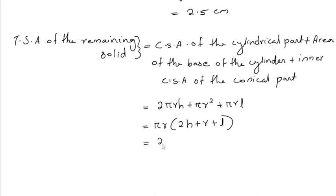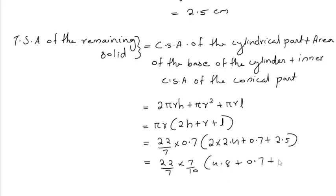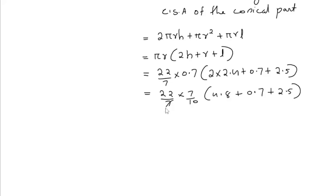By giving values 22 by 7 into radius is 0.7, inside the bracket 2 into height is 2.4 plus radius 0.7 plus slant height of the cone is 2.5. Remove this decimal by multiplying and dividing by 10. So we get 22 by 7 into 7 by 10. Inside the bracket when we multiply 2 into 2.4 we get 4.8 plus 0.7 plus 2.5. Cancel these 7s. Adding these 3 inside the bracket we get 8.